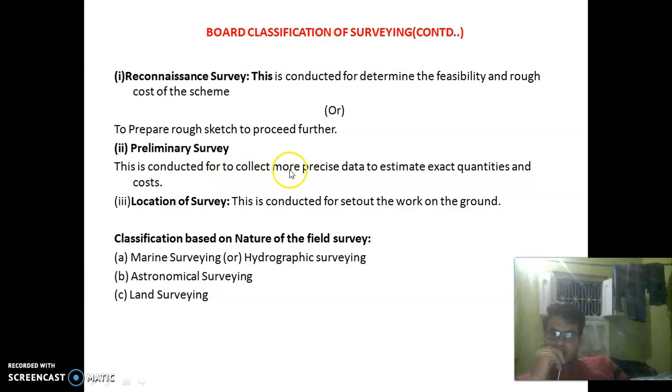Reconnaissance Survey is conducted to collect more precise data to estimate exact quantities and cost. Next is Preliminary Survey, which is conducted to set out the work on the ground.